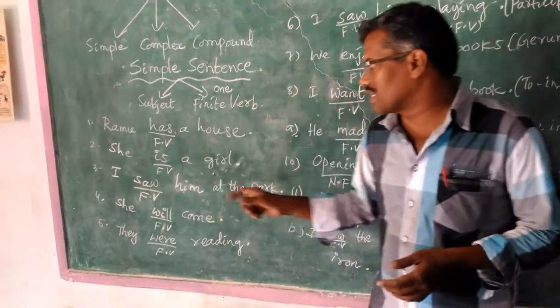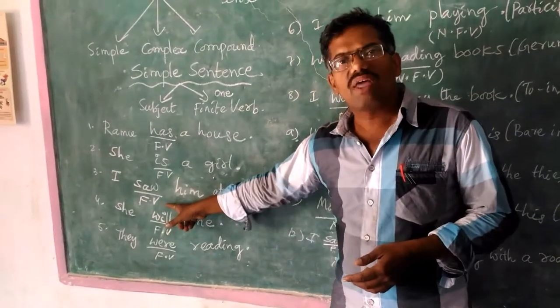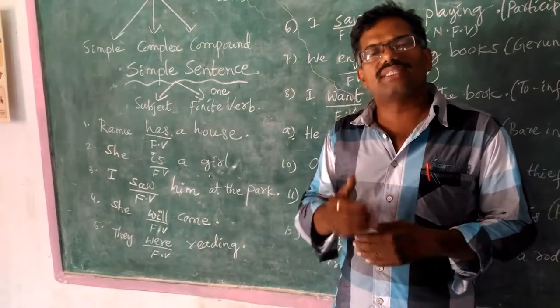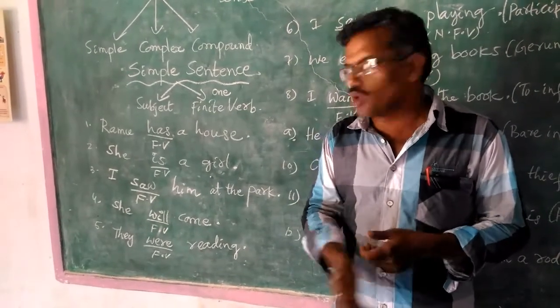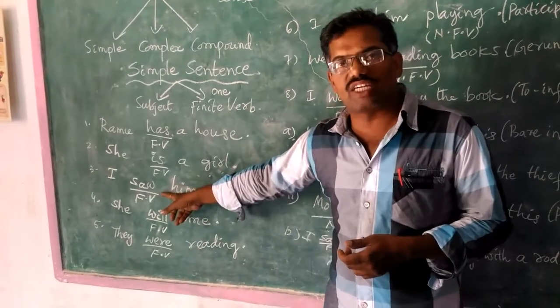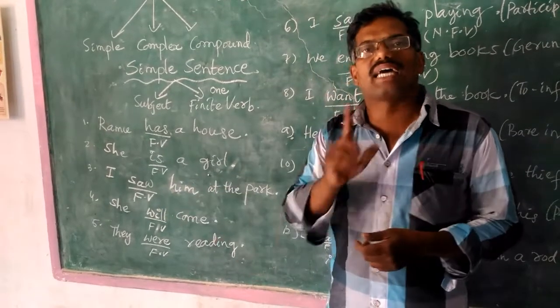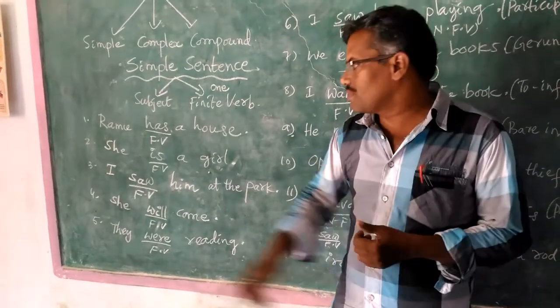In the third sentence, 'sorry' is a finite verb, and this can be changed into other tenses, so it is called a finite verb. As this sentence has only one finite verb,